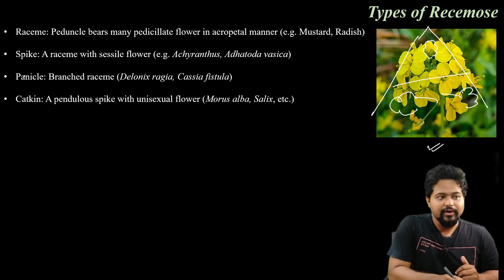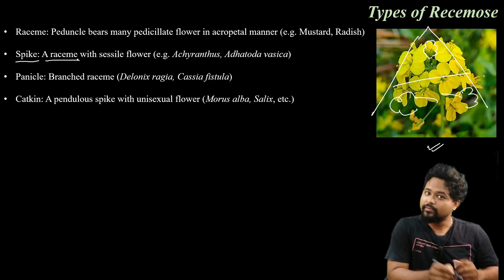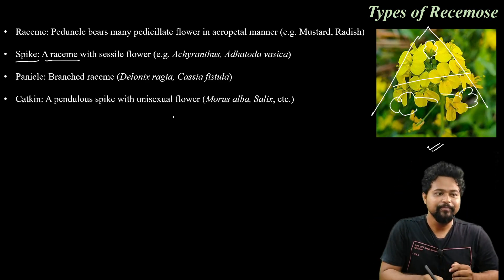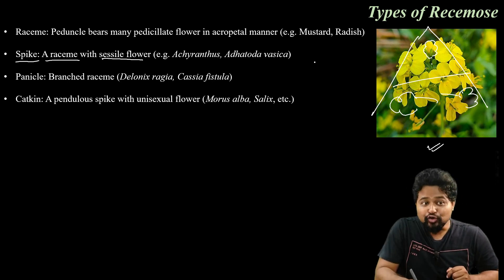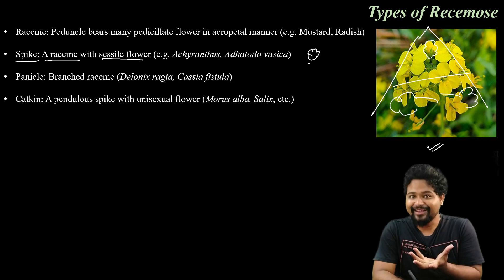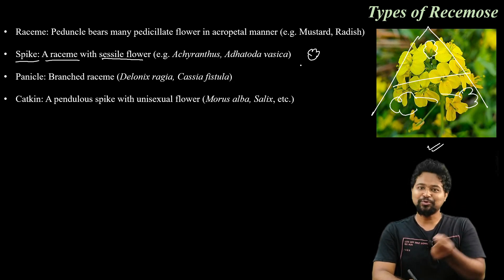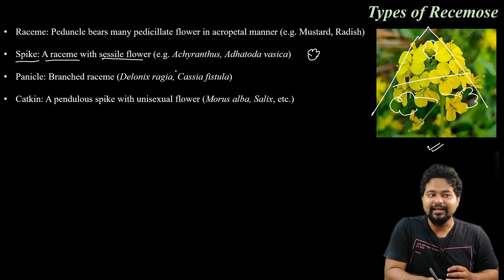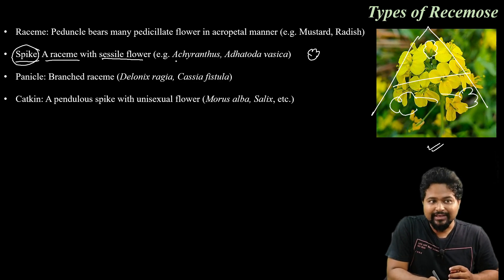The next racimose type two is spike. This is a racimose type with sessile flowers — sessile flowers means flowers without a stalk. So this is spike, a racimose type with sessile flowers. Example: Acanthus.